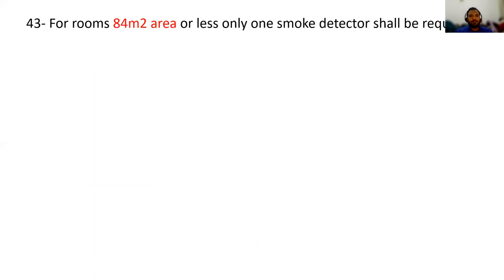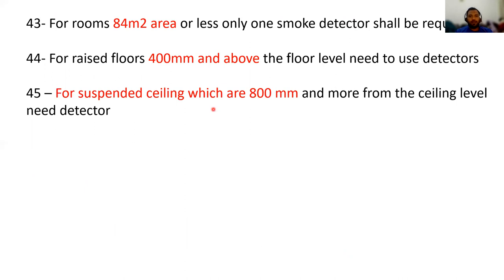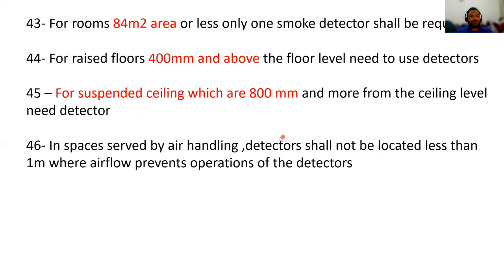For rooms of 84 square meters area or less, one smoke detector is required. For raised floors 400 mm and above the floor level, smoke detectors are needed. For suspended ceilings that are 800 mm or more, a smoke detector is required — it's called a duct detector. In spaces served by air handling units, detectors shall not be located less than 1 meter from airflow that would prevent operation of the detectors.